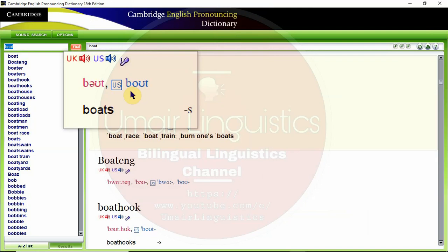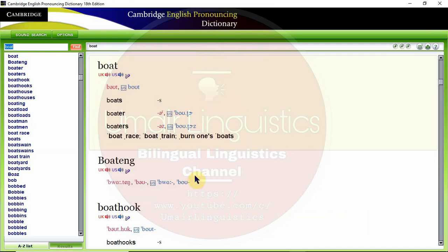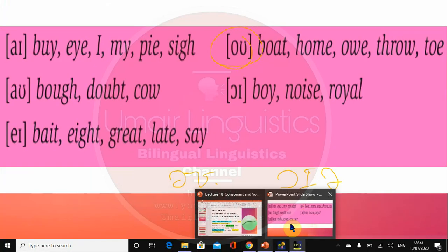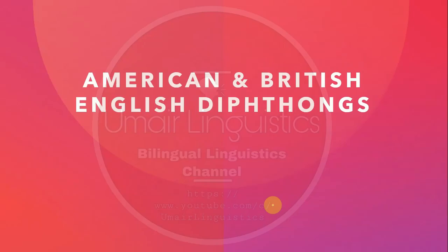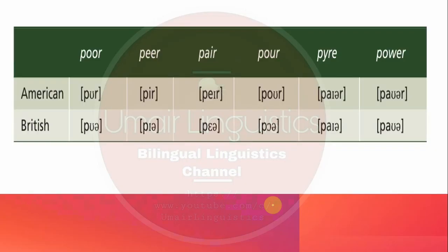If you are interested in phonetics, you should have materials such as the Cambridge English Pronouncing Dictionary and the Oxford Advanced Learner's Dictionary. Now, if we compare American and British English diphthongs, you will notice that British English has some more diphthongs compared to American English. For example, looking at the word 'poor' — in American English a diphthong does not appear in this word, but in British English it does.